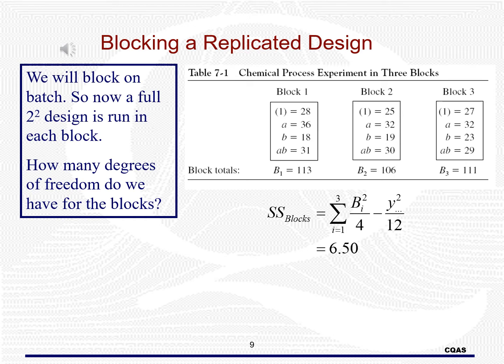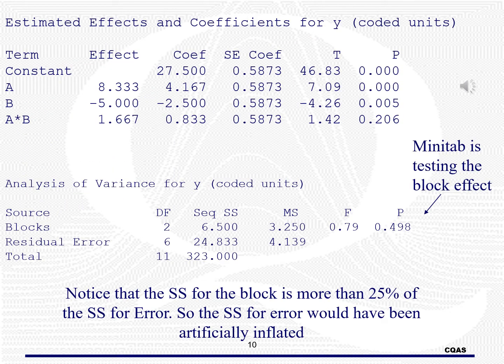In this case, we would get two degrees of freedom for the block, because the degrees of freedom for block is always the number of levels of the block minus one. Here is the formula for the sums of squares for block. Here is the output for the example. Notice that Minitab is testing the block effect. The sums of squares for block is more than 25% of the sums of squares for error, meaning that had we not taken out the block effect, our error estimate could be overinflated and we may have come to the wrong conclusions.